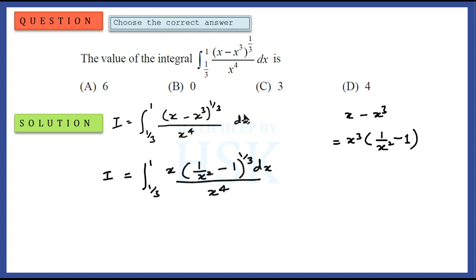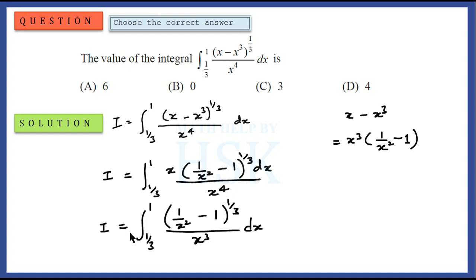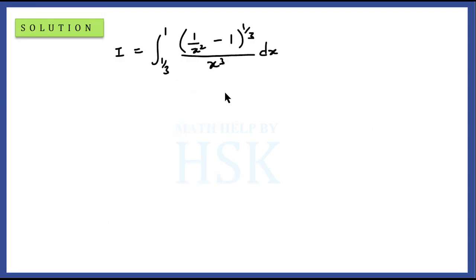So those two expressions are one and the same. Further, we can cancel this x with x to the power of 4 in the denominator to obtain x-cube, with the rest of the terms as they are. Now to solve further, I am going to perform a substitution: I place 1 upon x-square minus 1 as equal to t.